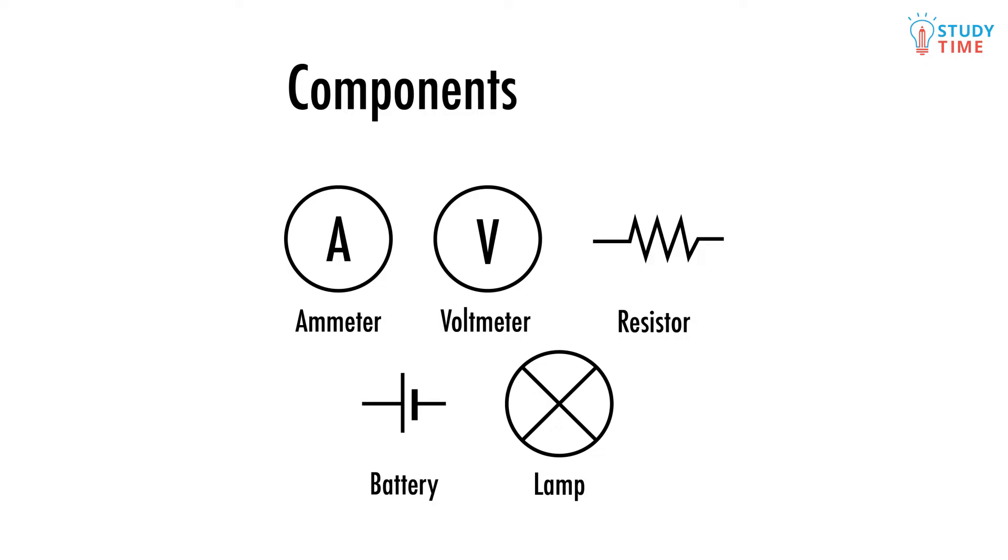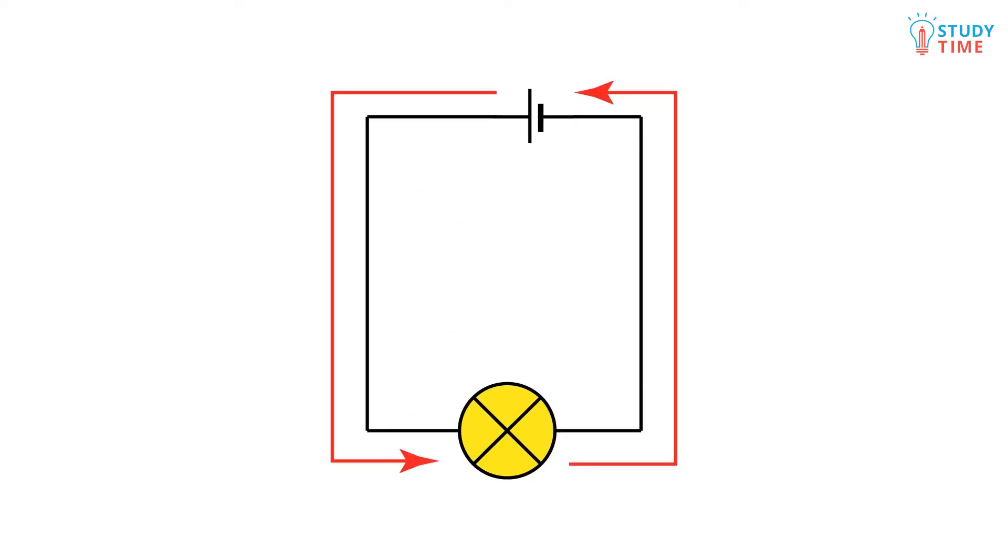In a circuit we have electricity flowing through wires and through any of the components: light bulbs, ammeters, voltmeters and so on that we connect. Lots of students find it hard to imagine how electricity is going to behave when it's in a circuit. Here's how to make it easier.